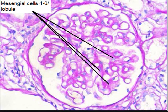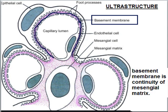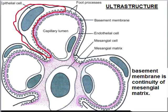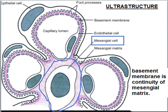There are 4 to 6 mesangial cells per lobule. Here you can see the ultrastructure of a portion of the glomerulus. There is a basement membrane, lined inside by fenestrated capillary endothelial cells with small gaps. Outside of the basement membrane is lined with epithelial cells, which have foot processes, and there are mesangial cells and mesangial matrix.